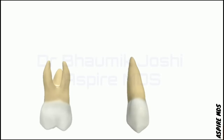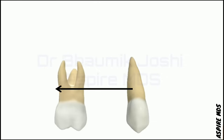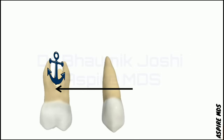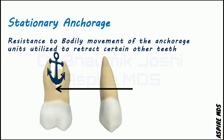In another scenario, when the molar is trying to retract the canine, it starts showing bodily movement. The type of resistance which resists the bodily movement of the anchor unit while causing retraction of the canine is known as stationary anchorage.